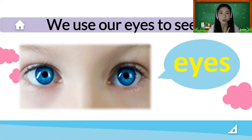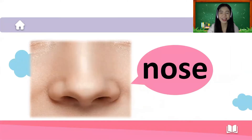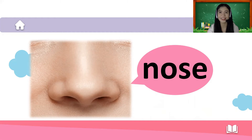Humans have two eyes. Next we have our nose. Can you touch your nose? Let's spell the word nose: N-O-S-E.